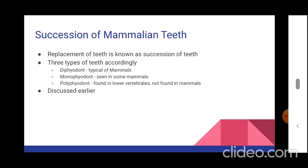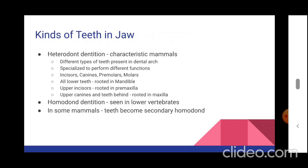Succession of mammalian teeth refers to the replacement of teeth in the mouth cavity — the upper jaw and lower jaw. There are three types of dentition: diphyodont, monophyodont, and polyphyodont. Diphyodont dentition is typical to mammals; monophyodont is seen in some mammals; polyphyodont is found in lower vertebrates and not at all in mammals. All three conditions were discussed in earlier sessions.